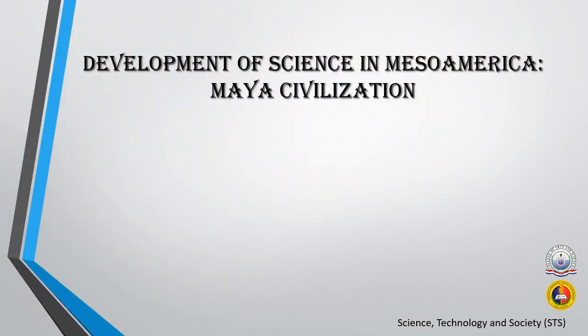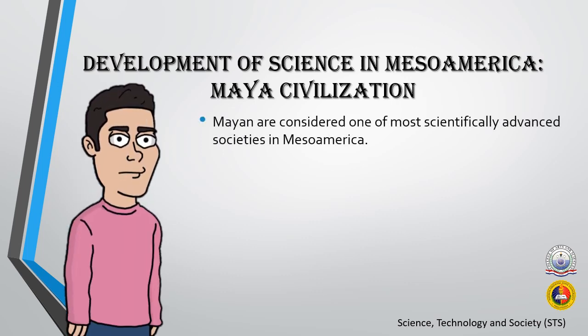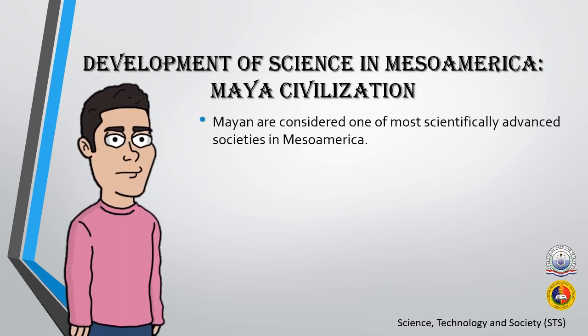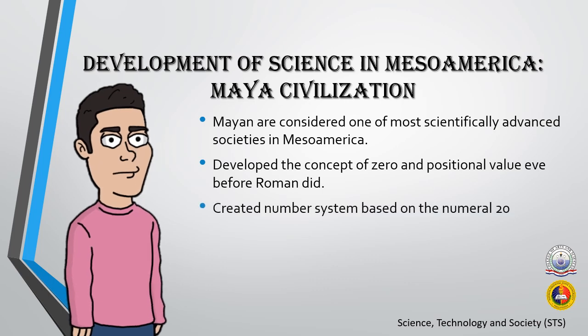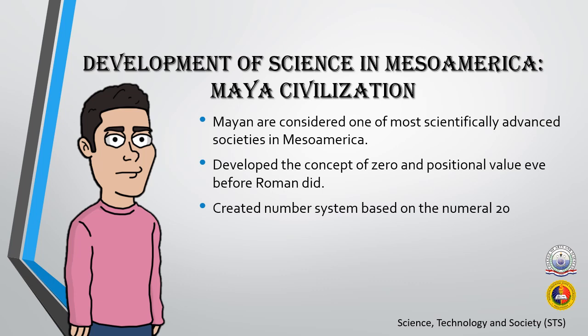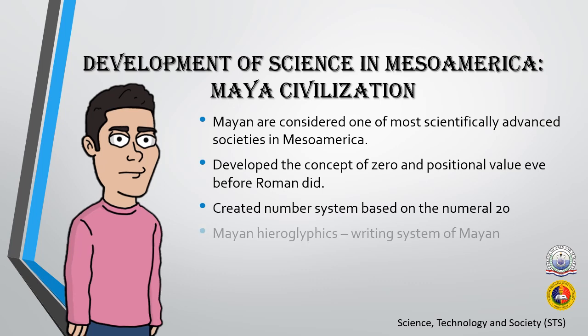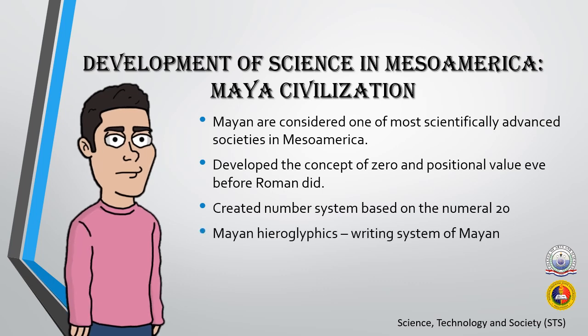Mayans are considered one of the most scientifically advanced societies in Mesoamerica. They developed the concept of zero and positional value before the Romans did, creating a number system based on the numeral 20. They also developed the Mayan hieroglyphic writing system and were skilled in mathematics.